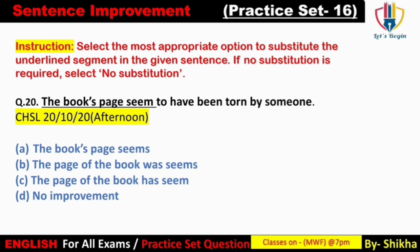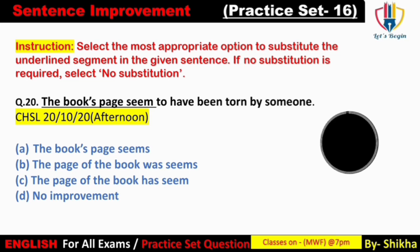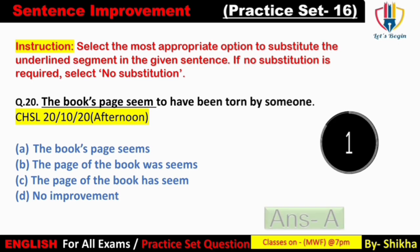Next: 'The books page seem to have been torn by someone.' 'Page' third person ka singular number hai, iske liye 'seems' aayega. Option A aur B mein 'seems' diya gaya hai. Option B mein 'after the page of the book was seems' — 'was' laga kar galat kar diya gaya hai. Simple present form mein hona chahiye kyunki baad mein 'have been' diya gaya hai. Answer: option A — 'The books page seems to have been torn by someone.'